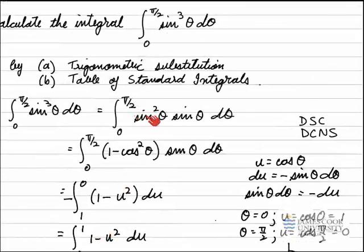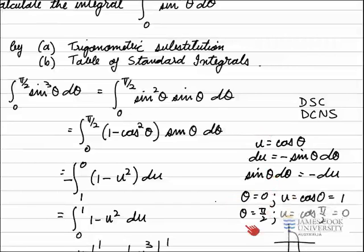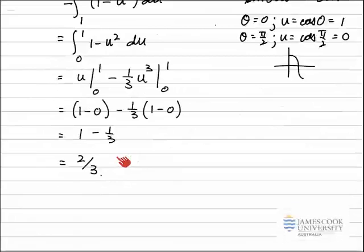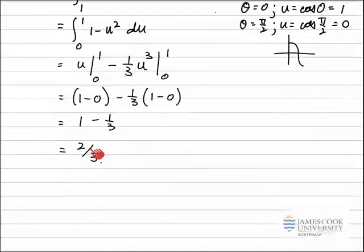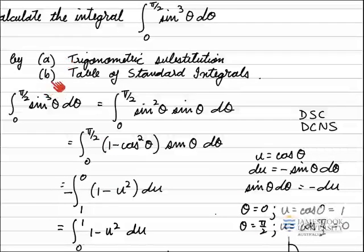We made a trigonometric substitution. We noted that we had an odd power of sine — the usual method is to take one power off the top, transform all the others, and make the substitution. Don't forget to transform the limits as well. Then it becomes a standard integral and we go through to get the answer. The next video will cover Part B of this integral, using the standard table of integrals.